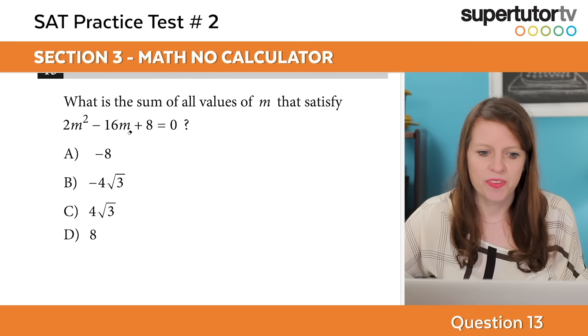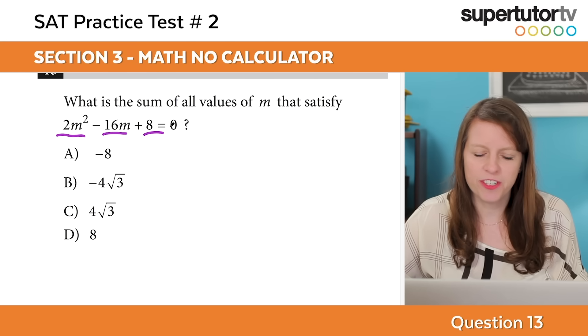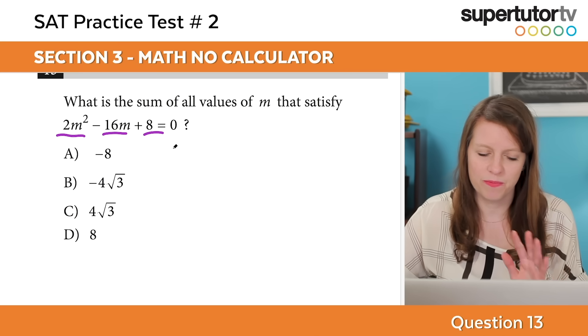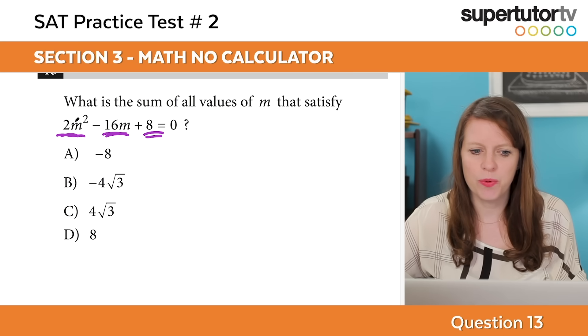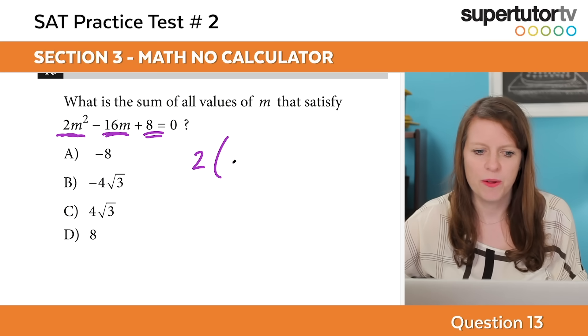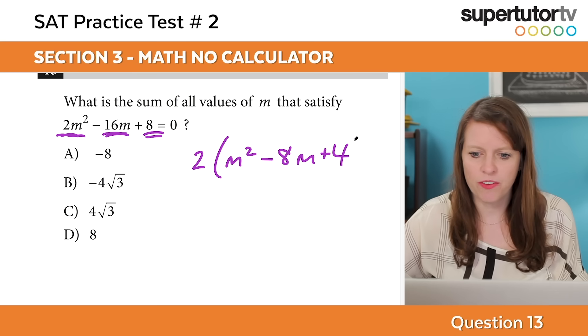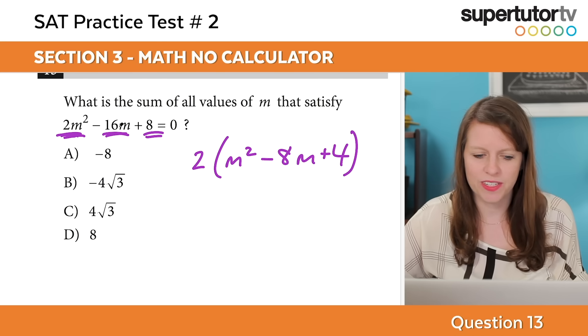What I want to point out is that one, this might be easier to factor than you first think. And two, if you can't see a way to factor it, you can use the quadratic equation and it's not going to be that bad. The first thing I'm going to do, you see how each of these has a 2 in the monomial? 2m squared, 16, 8. Each has 2 as a factor. So the first thing I'm going to do is factor out the 2.